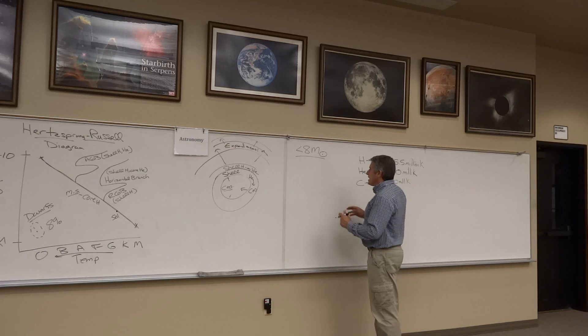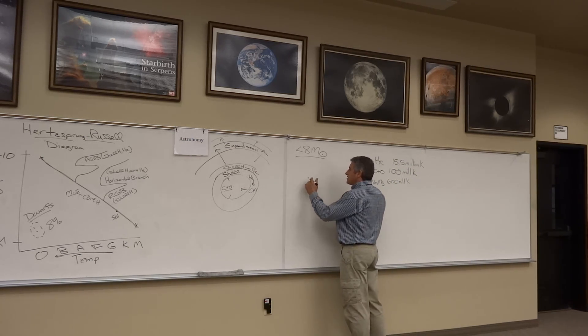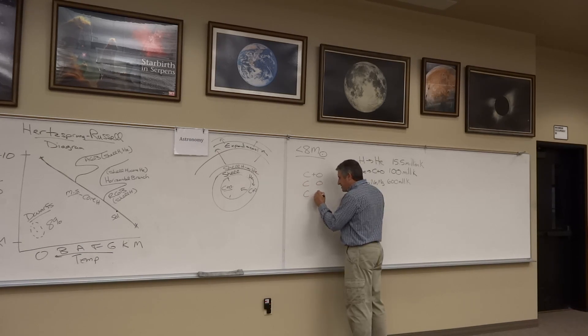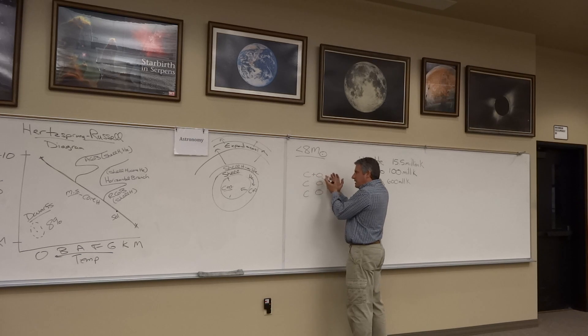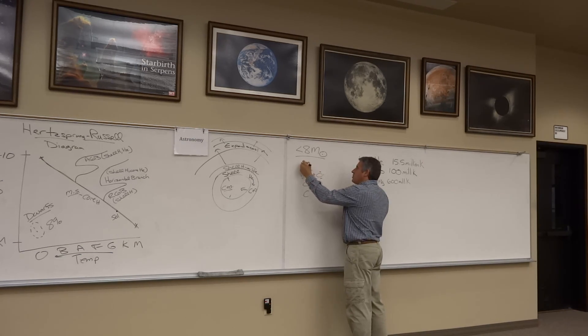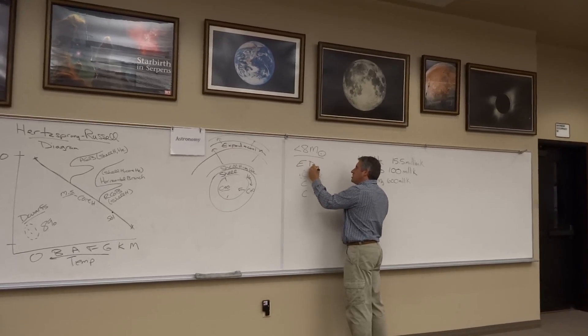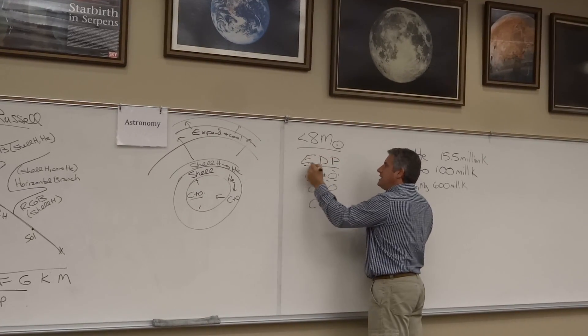What happens instead is as the carbon and oxygen in the core collides with other carbons and oxygens, the electrons in the carbon and the oxygen actually start to bang into each other. This is known as Electron Degeneracy Pressure or EDP.